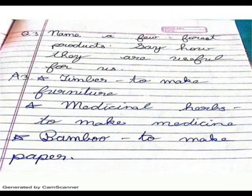Forest products and their uses: timber is used to make furniture, medicinal herbs to make medicine, bamboo to make paper, and sandalwood to make items such as oil and incense.